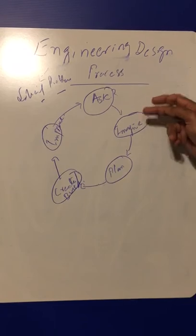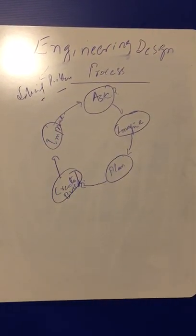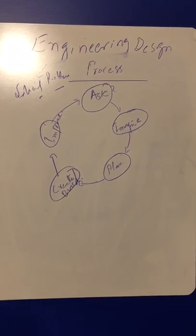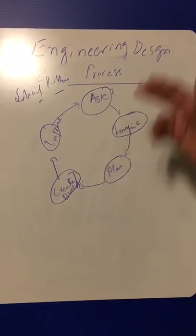These are the five key steps: ask a question, think and imagine, plan, create, and improve. Finally, you improve your product or improve your solution to that problem. This is known as engineering design process.